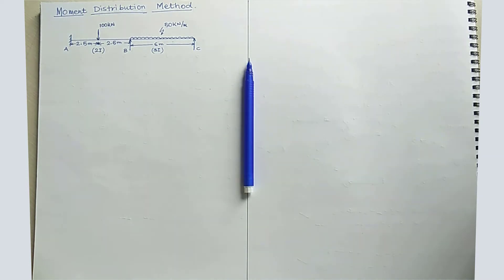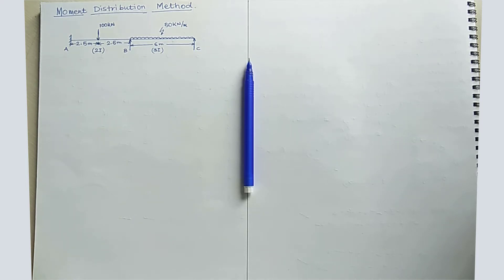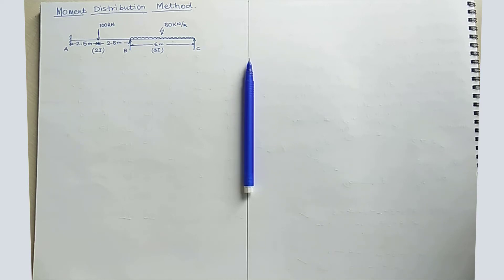This method is essentially balancing the moment at a joint or junction. It can be described as a method which gives a solution by successive approximation of slope deflection equations. To analyze any redundant frame structure by the moment distribution method, we have to go through several steps: first is the calculation of fixed-end moment, then distribution factor, and then the distribution moment, which distributes moment according to the stiffness of the member and the unbalanced moment.